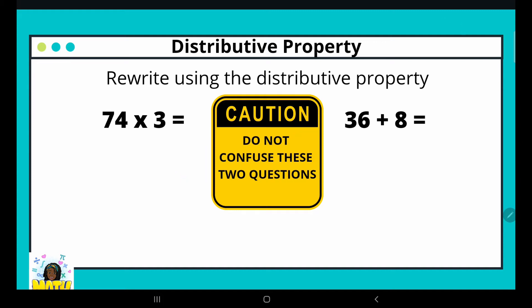So do not get these two confused. When rewriting the product of two numbers, you can easily break this number up into two numbers. I can break this up into 70 plus 4 and then bring down my 3.